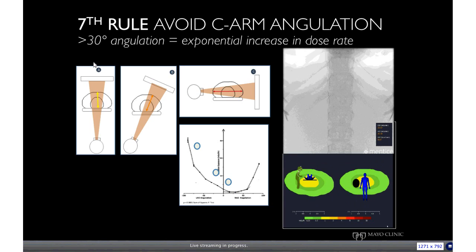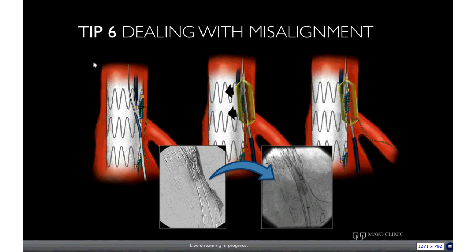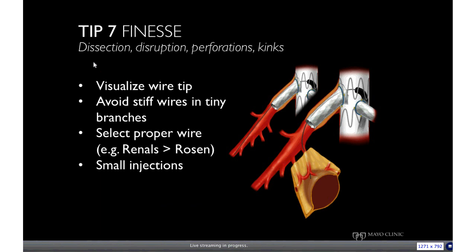There are many tips for bailing out from these procedures. Particularly with fenestrations, which are less forgiving than branches, there may be issues that need to be addressed endovascularly, such as misalignment of the stent or perforations in the vessels. Here is an example of stent misalignment treated by inflating a balloon to create space to catheterize the vessel. In this scenario, having fusion imaging to locate the vessel without repeated contrast injections is remarkably useful. The seventh tip is to use finesse on your endovascular techniques to avoid dissection, disruptions, perforations, and kinks. Visualize your wire tip at all times, avoid excessively stiff wires on tiny branches, and properly select your wire according to the angulation of the particular vessel.